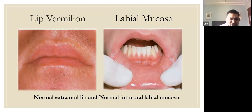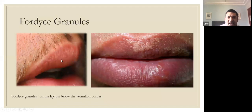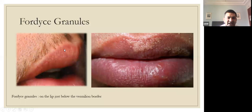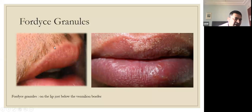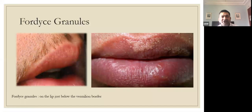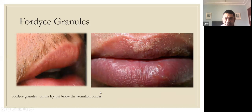The first variation of normal on the lip mucosa is Fordyce granules. These are classic when located just at or just below the vermilion border. If they appear anywhere else, we cannot call them Fordyce granules. Fordyce granules are ectopic sebaceous glands — sebaceous glands not present where they are normally supposed to be. The most common sites are the labial mucosa and the buccal mucosa.